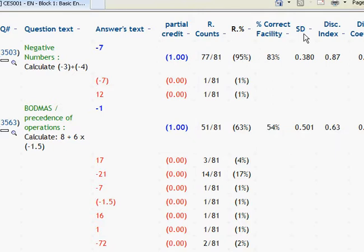We also have some question statistics listed, so discrimination coefficient, discrimination index and facility. And these can be used to identify questions that are ambiguous or that are too easy or too difficult.